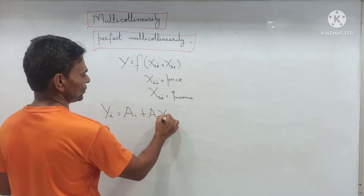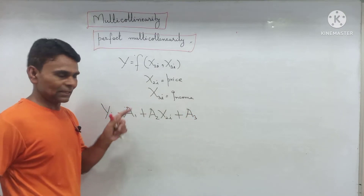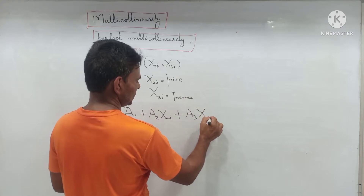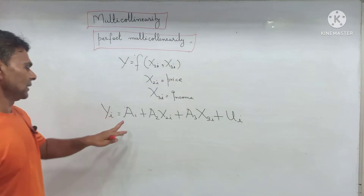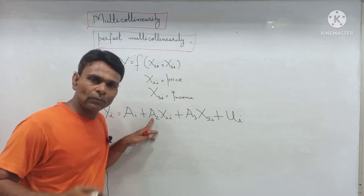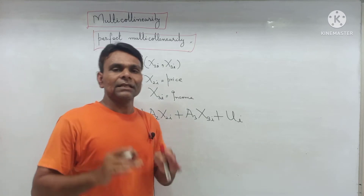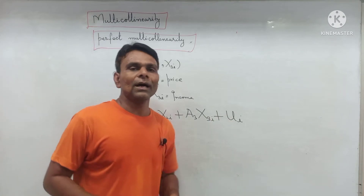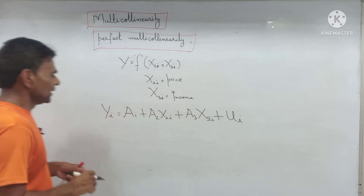The regression model is: Yi = a1 + a2·X2i + a3·X3i + ui, where a1 is the intercept, a2 is the slope of price (X2i), a3 is the slope of income (X3i), and ui is the stochastic error term, that is the disturbance term.